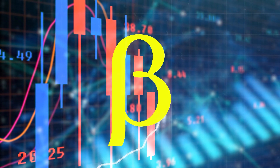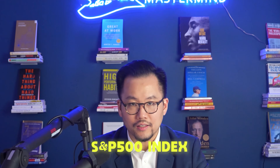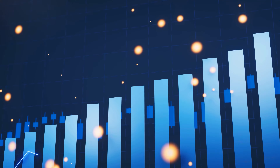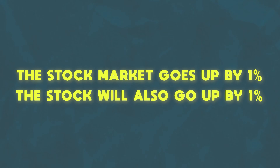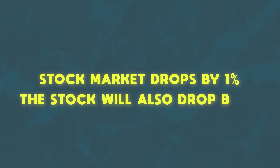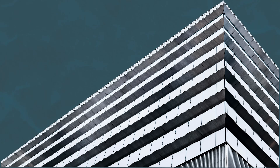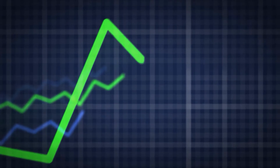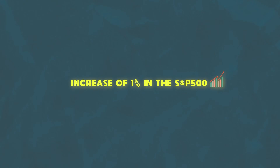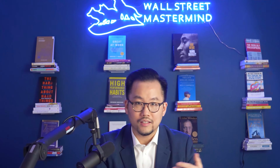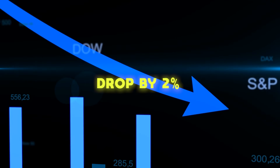Next, let's talk about beta. Beta is a measure of the volatility of a stock compared to the market as a whole, which is typically represented by the S&P 500 index. If a stock has a beta of 1, that means it moves in lockstep with the stock market — if the market goes up by 1%, the stock will also go up by 1%, and vice versa. If a company has a beta of 2, then its stock price will move up twice as much as the stock market — so a 1% increase in the S&P 500 will cause a 2% increase in the company's stock price, and the same applies in the opposite direction.